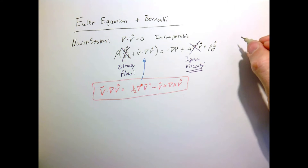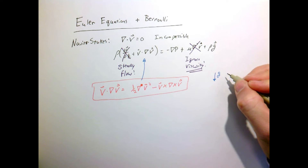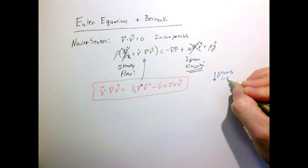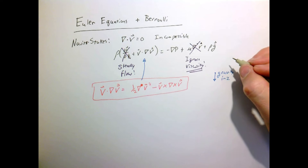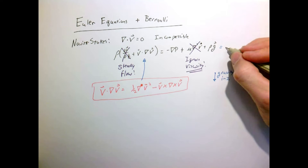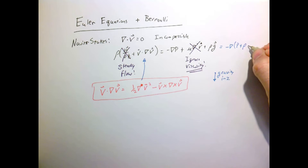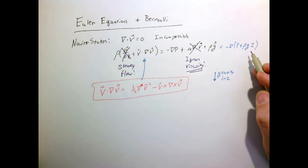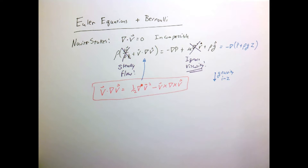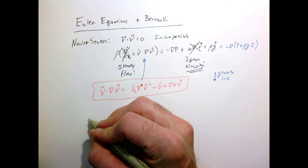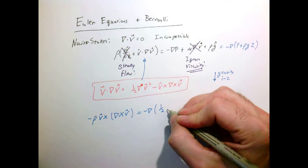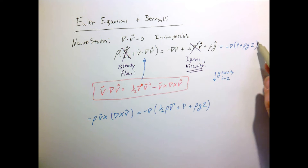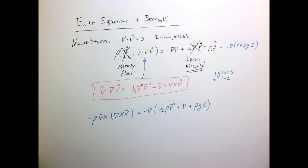I'm going to make another assumption: that gravity is pointing downward in the z direction. So when gravity points in z, I can write the right-hand side as minus the gradient of p plus rho*g*z. Those two things are equivalent because gravity is a vector only pointing in the z direction, therefore it has a gradient and we take the derivative with respect to z. Making these simple substitutions gives us the following equation, which is just a different form of what we already knew.